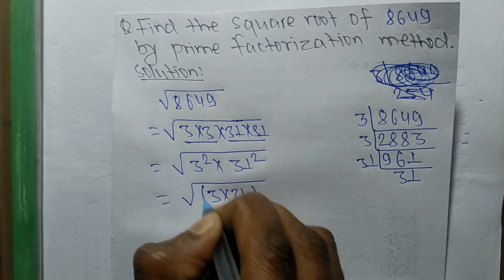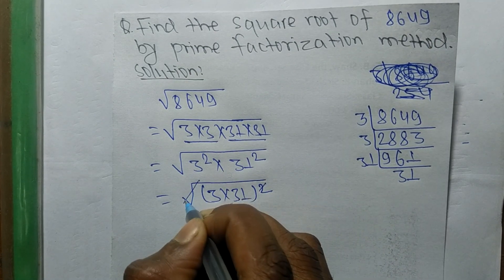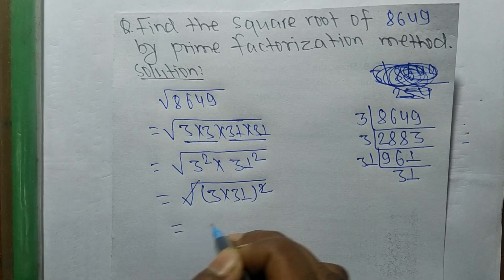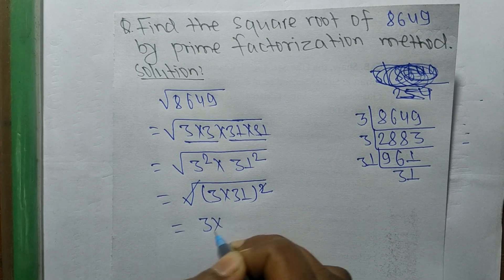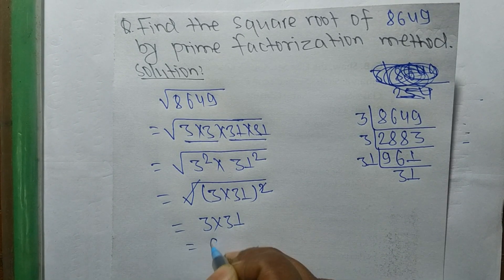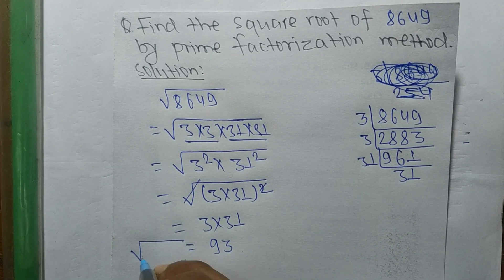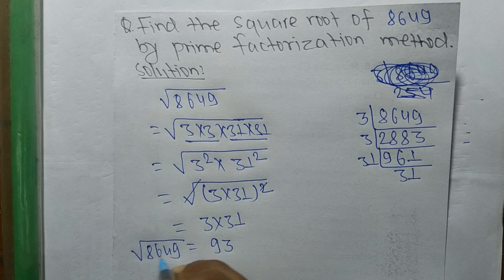So now a square and a square root cancel each other, so the remaining numbers are 3 into 31. So 3 into 31 means it is 93. So the square root of 8649 is equal to 93.